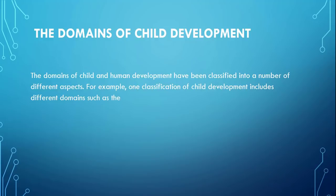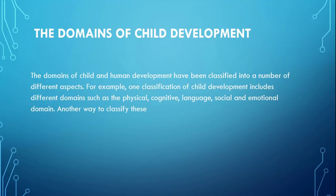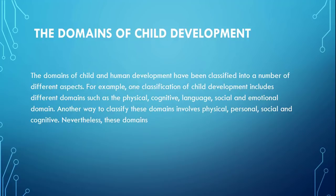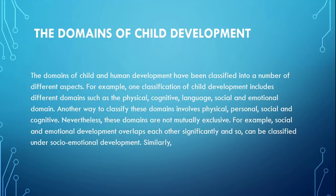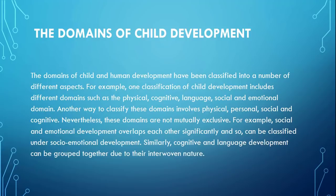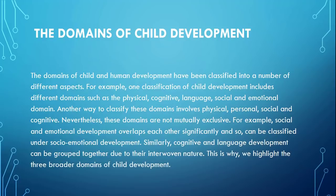The domains of child development have been classified into a number of different aspects. For example, one classification includes physical, cognitive, language, social and emotional domains. Another way to classify these domains involves physical, personal, social and cognitive. Nevertheless, these domains are not mutually exclusive — social and emotional development overlap each other significantly and so can be classified under social and emotional development.